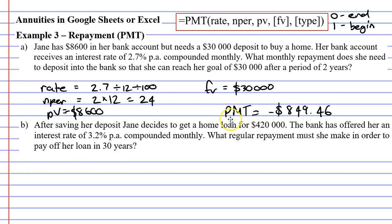In fact, we don't use PMT to represent a repayment. When we talk about repayments, we use the pronumeral capital D, and we don't talk about them being negative. I'm going to get rid of the negative because this solution is not for Microsoft Excel or Google Sheets — this solution is for us to answer this question.